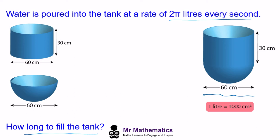So to work this out I'm going to break up the tank into a cylinder which is here and a hemisphere. We'll work out the volume of each of these shapes and then we'll look at converting the 2π liters into centimeters cubed.